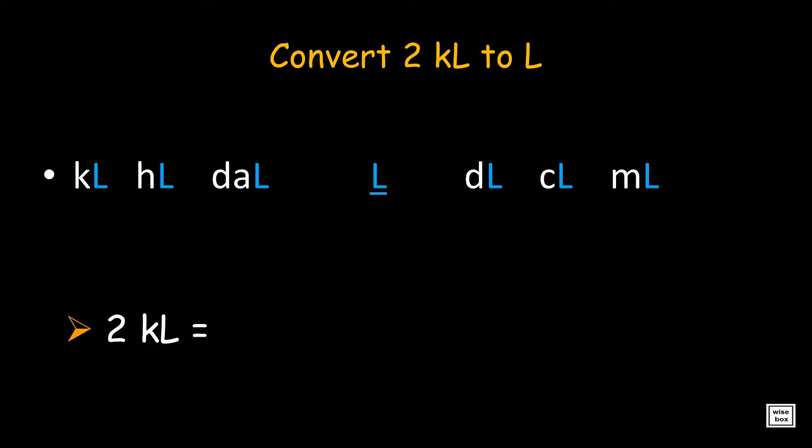Another one. Convert 2 kiloliters to liters. Move the decimal point to the right three times. Answer is 2000 liters.